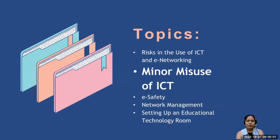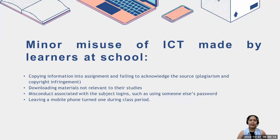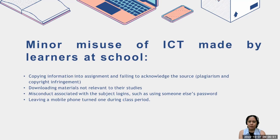We are done with the first topic. Now let us go to the second topic, which is the minor misuse of ICT in schools. Number one is copying information into assignments and failing to acknowledge the source. We call it plagiarism and copyright infringement, which is punishable. If you are getting someone else's ideas from online research, make sure to acknowledge the author to avoid plagiarism and copyright infringement.